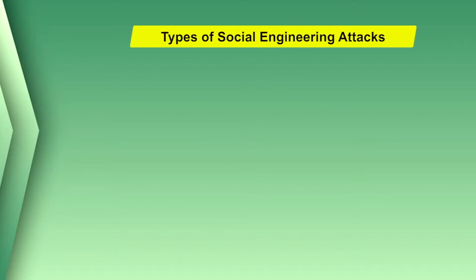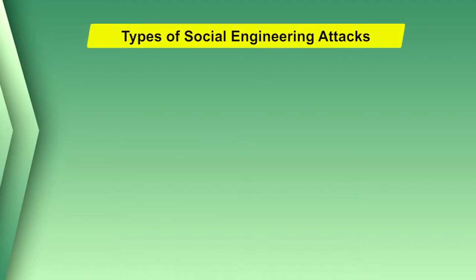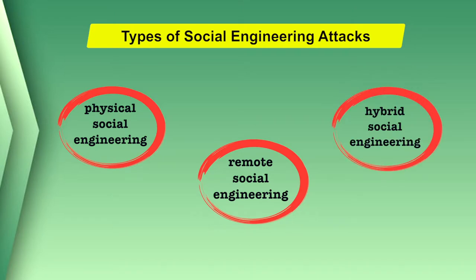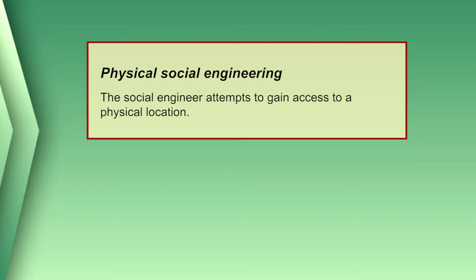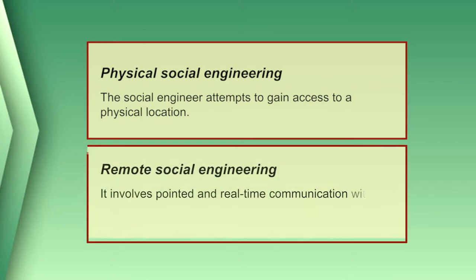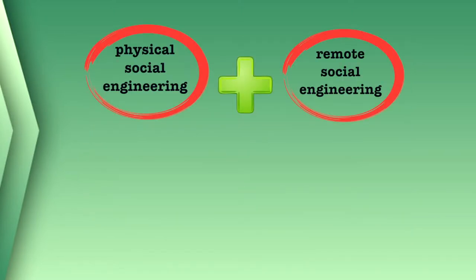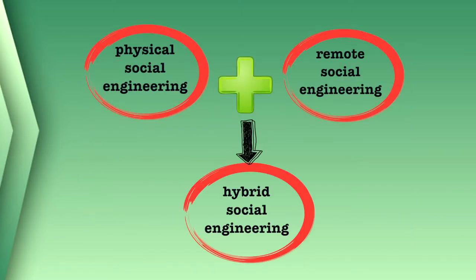There are many types of social engineering attacks but they can be broadly split into three categories: physical social engineering, remote social engineering, and hybrid social engineering. In physical social engineering, the attackers attempt to gain physical access to a sensitive office or location. In remote social engineering, the attacker attempts to gain access to information or resources remotely, for example over the phone or via email. Some attackers combine both strategies, known as hybrid social engineering.